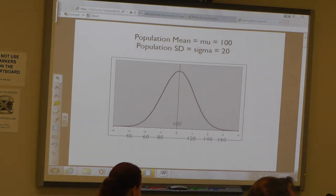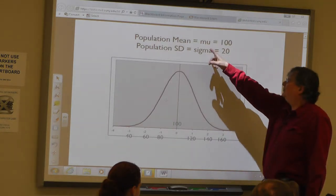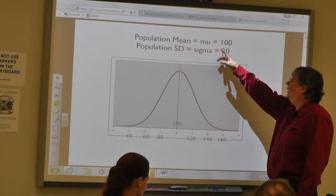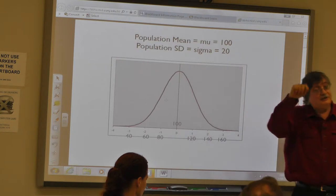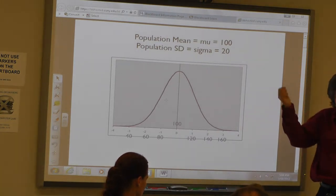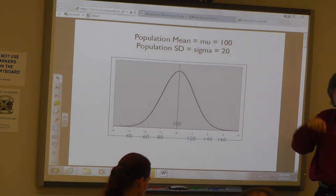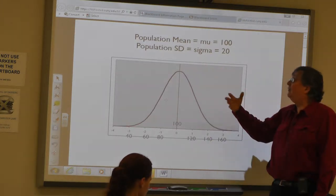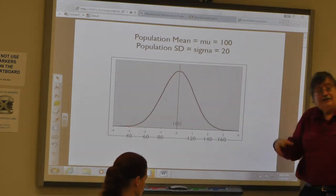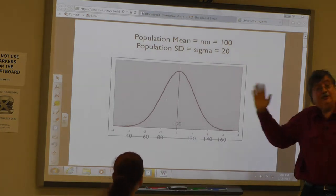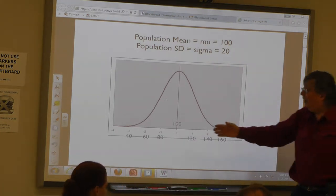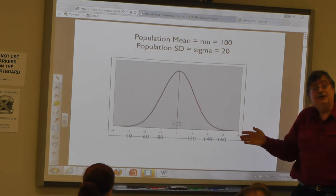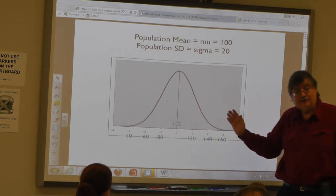This represents a population — everybody in a population. The population mean is mu, which is 100. I'm not showing it as X-bar; I'm showing it as a Greek letter. The standard deviation for the population is 20, and this represents the distribution of the entire population. Half the population has a value above 100, half the population below 100.